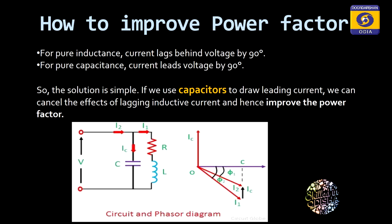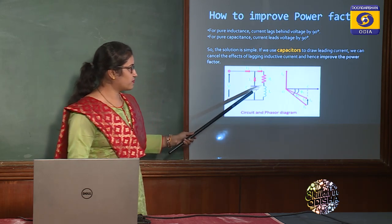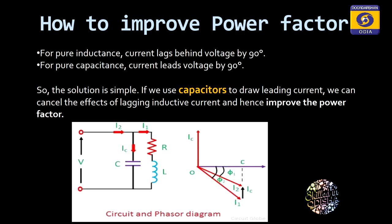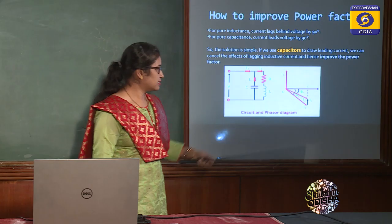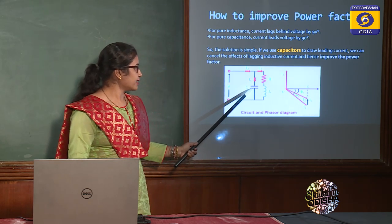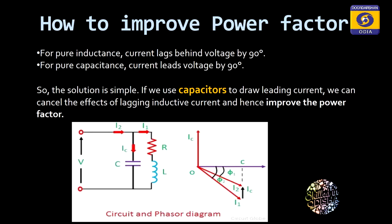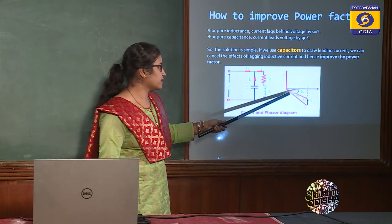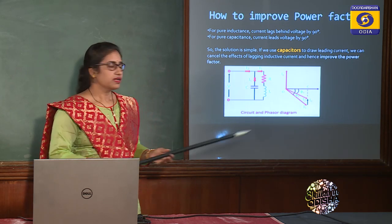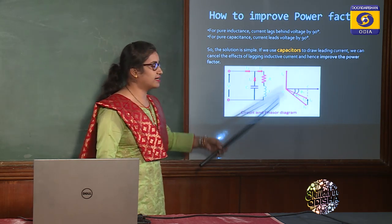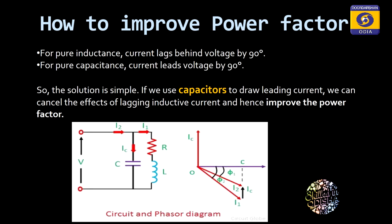Looking at this phasor diagram: suppose we have an RL load. The violet line indicates the voltage, and I1 is the current flowing through the RL load at a lagging angle phi2 from the voltage phasor. When we add a capacitor — whose current leads the voltage by 90 degrees — the power factor angle decreases to phi1. You can see the angle decreases, meaning power factor increases. By this technique we can improve the power factor of such loads.